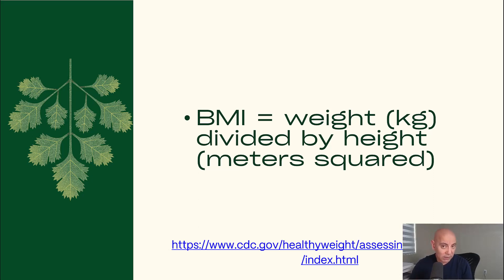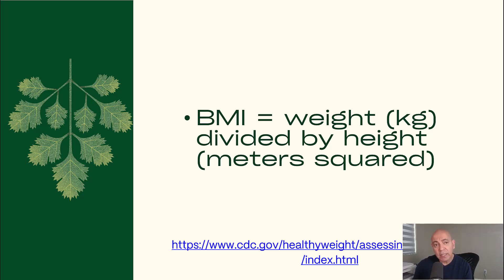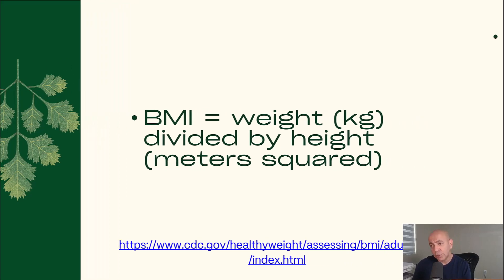How do you calculate BMI? It's very simple. You can go on Google or any web browser and find all the formulas. Essentially, it's weight in kilograms divided by height in meters squared. If you're using pounds, convert to kilograms; if using inches, convert to meters and square that number. You can use any online calculator to do the calculation for you.